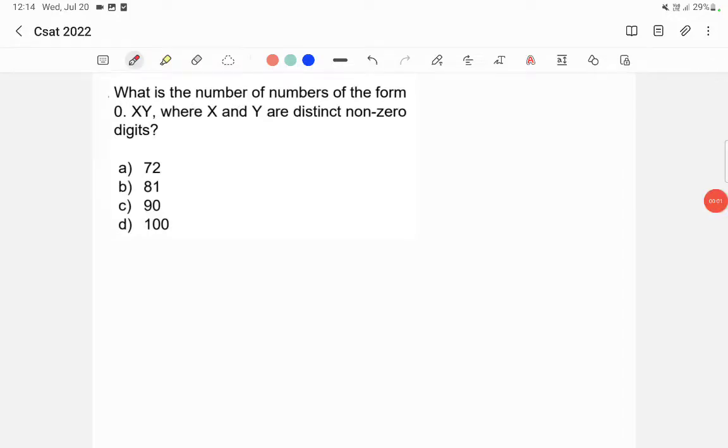What is the number of numbers of the form 0.xy where x and y are distinct non-zero digits? Okay, so this is 0.xy.